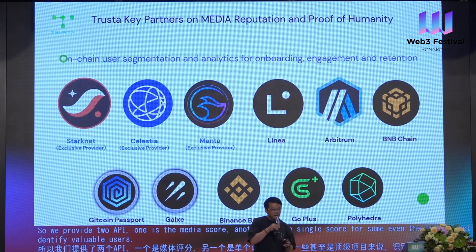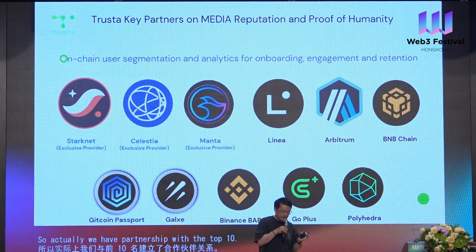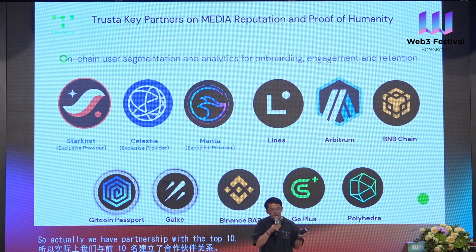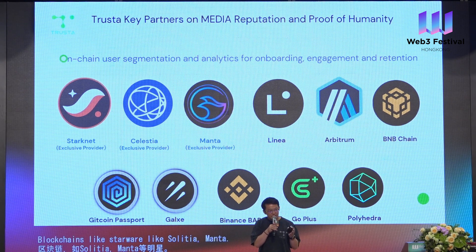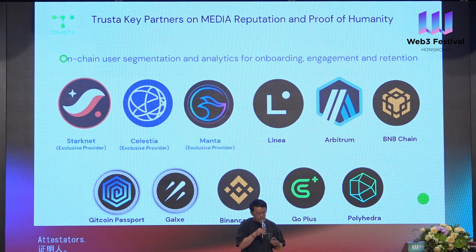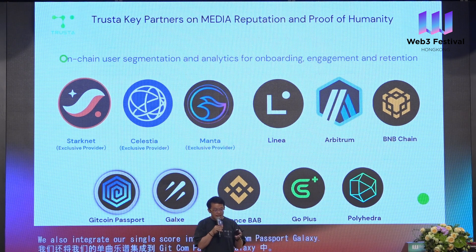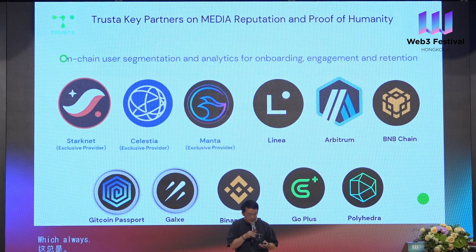We have partnerships with the top 10 blockchains — like StarkWare, Solitea, and Manta — as the exclusive data provider for their data-driven airdrops. We also work with Linea, Arbitrum, and BNB Chain, becoming the top proof of humanity attestation provider to help them identify important users. We also integrate our sybil score into the Gitcoin Passport, Galaxy, Binance, GoPlus, and Polyhedra, which are all top-tier players in their respective areas.